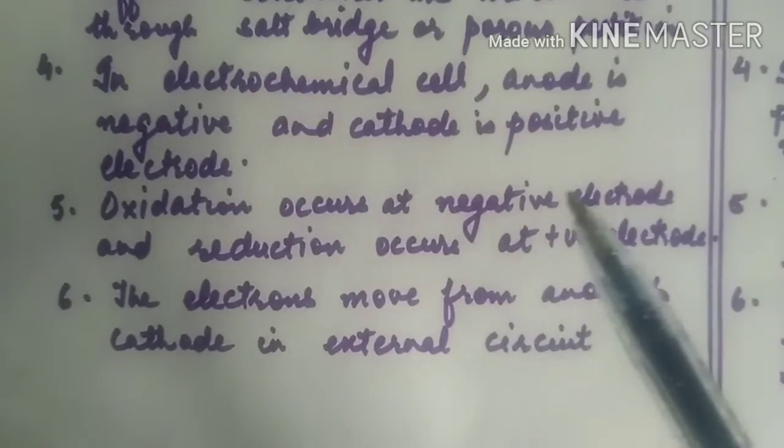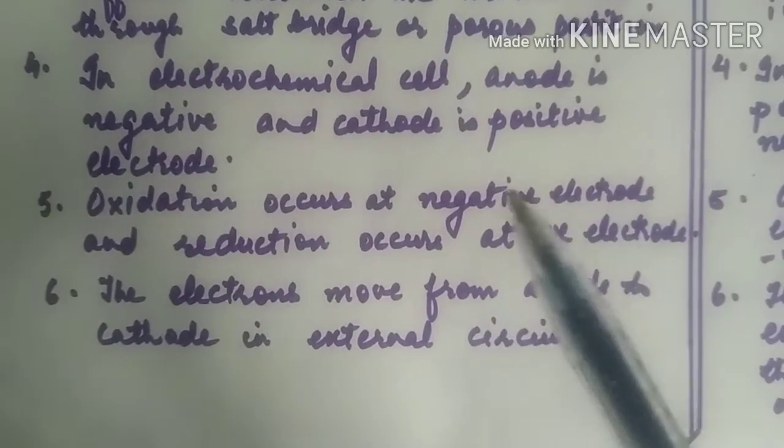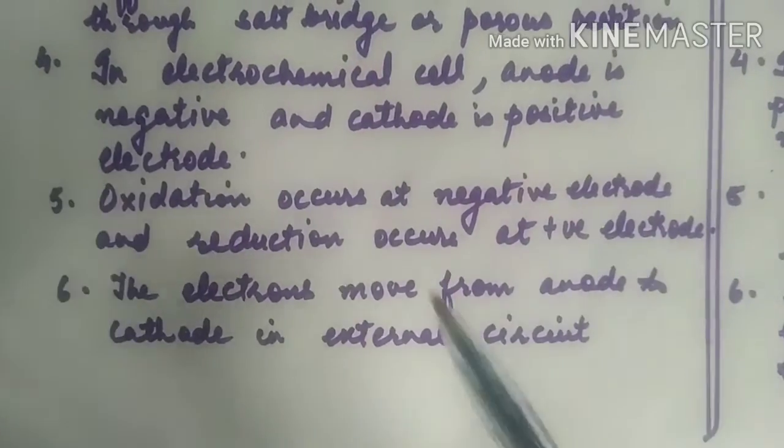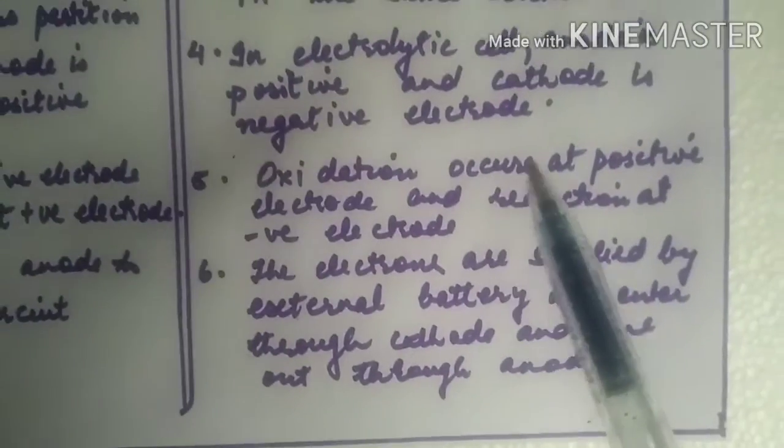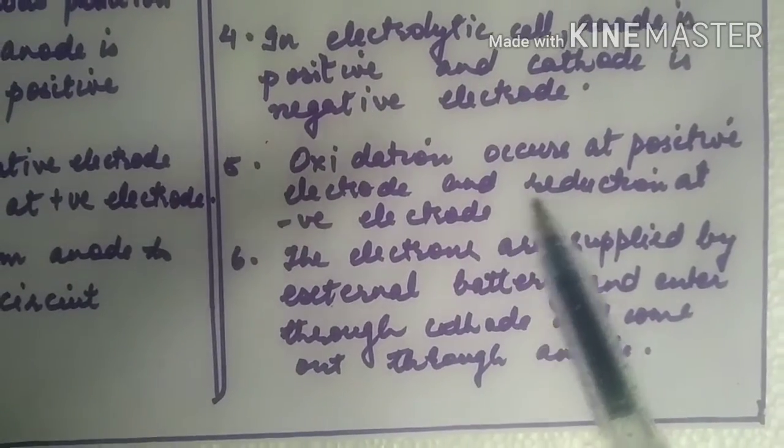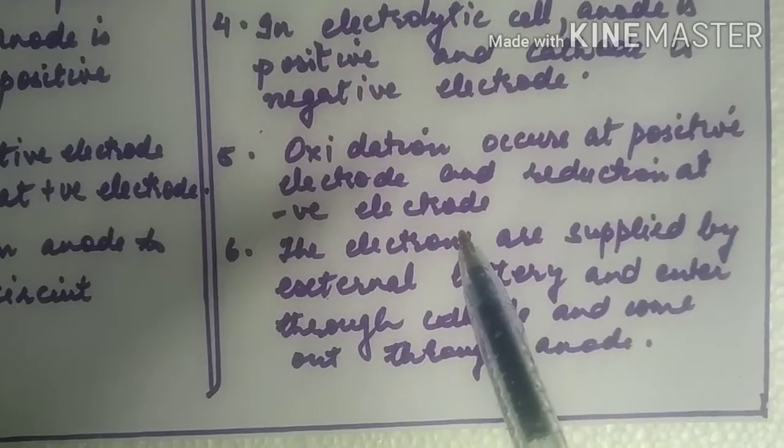Oxidation occurs at negative electrode that is anode and reduction occurs at positive electrode that is cathode. Oxidation occurs at positive electrode and reduction at negative electrode.